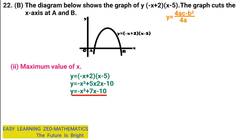Where there is a, I'm going to put the coefficient of negative x squared, which is negative 1. Where there is b, I'm going to put 7. Where there is c, I'm going to put negative 10. So I write: 4 times negative 1 times negative 10, then minus b squared, which is 7 squared, all over 4a.